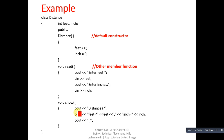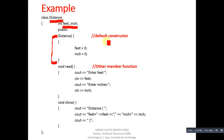Now this is an example. Here I have defined a distance class in which two members — feet and inches — are available. Inside the default constructor definition, feet and inch are both initialized with zero. You can also use any other value here. Then the read function reads feet and inch values from the user, and the show function will display the values on the console.